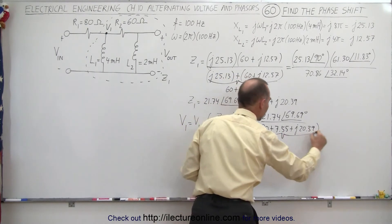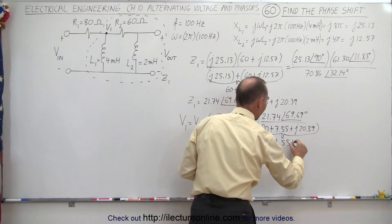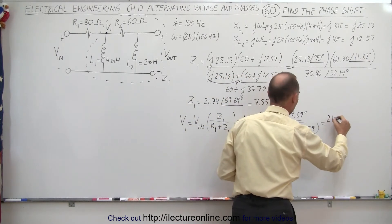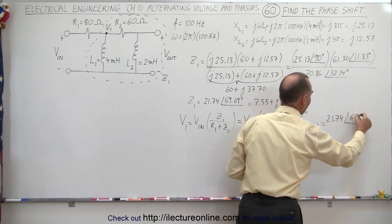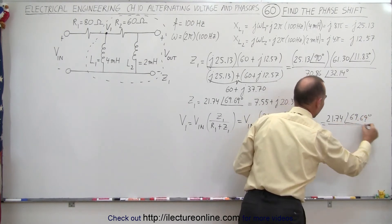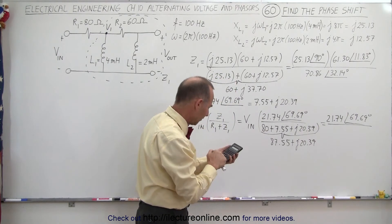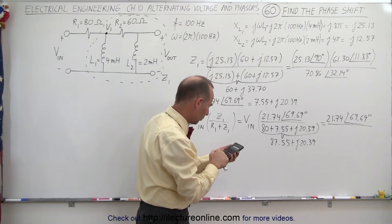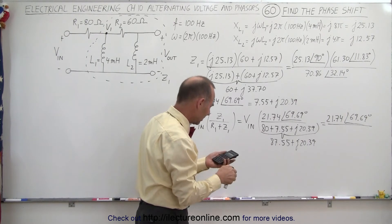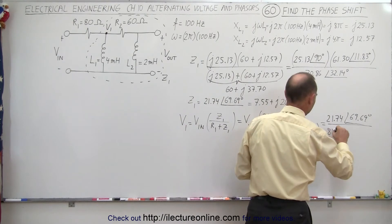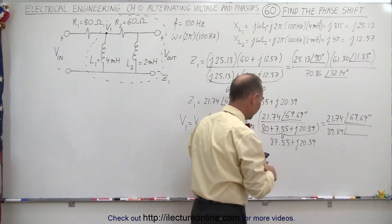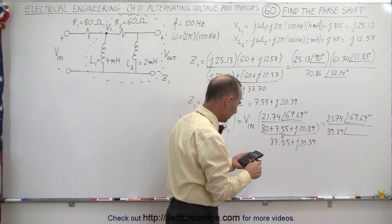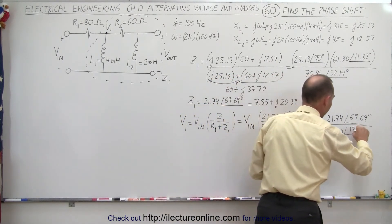When we combine these two, this will be 87.55 plus J20.39. Writing this into magnitude-angle format, in the numerator we have 21.74 at an angle of 69.69 degrees, divided by — in the denominator — the square root of 87.55 squared plus 20.39 squared, which gives us 89.89, with a phase angle of the inverse tangent of 20.39 divided by 87.55, which is 13.11 degrees.